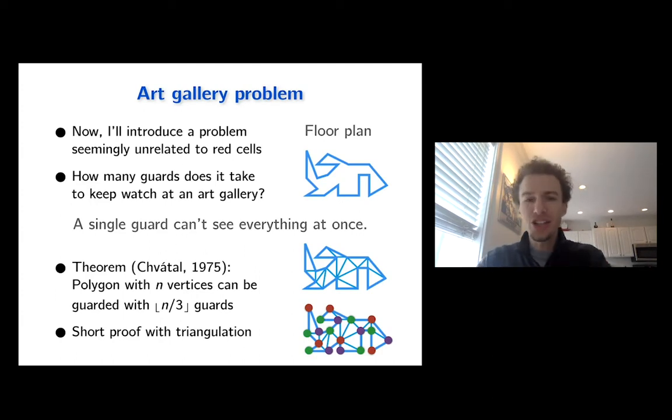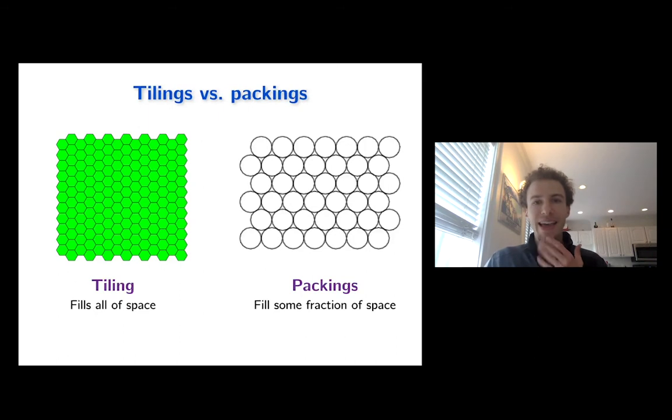And so, again, this idea of a triangulation comes up because to prove this, as was done by Chvátal in 1975, turns out you can first triangulate this polygon. And I'm not going to explain all of the details here, but then you use this idea of a graph coloring, which comes up in graph theory. You can basically place some different colors at each of the vertices of these triangles. And based on that, you find this conclusion that n over three guards is sufficient. So again, this idea of a triangulation is kind of a key concept that comes up again.